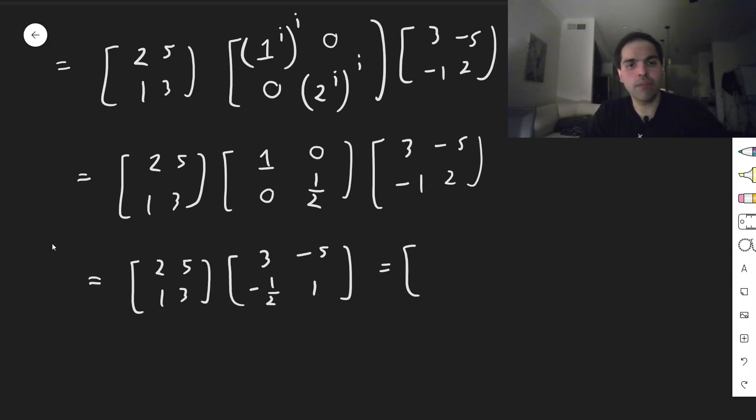So I believe 6 minus 5 halves, that becomes 7 halves. Minus 10 plus 5, that's minus 5, and that is 3 minus 3 halves, that's 3 halves, and then minus 5 plus 3, that is minus 2.